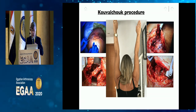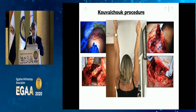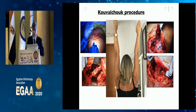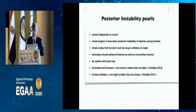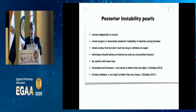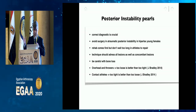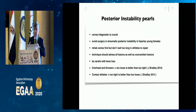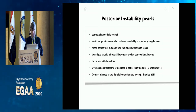My point is that in posterior shoulder instability you have to be very careful the first time you operate. Make sure there is real pathology, because some patients can lead you to bad results. It is not uncommon to see patients with multiple procedures for posterior instability. Correct diagnosis is crucial — distinguish between posterior traumatic dislocation, subtle instability, or multidirectional instability — the variety of pathologies is large.